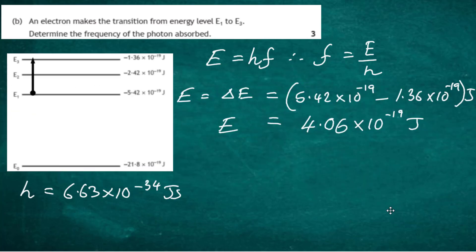So back to the equation again, the frequency of the photon is going to be equal to E divided by h, so we have got the energy level now, so frequency is going to be equal to energy difference 4.06 times 10 to the minus 19 joules. And we're going to divide that by the Planck's constant, which is 6.63 times 10 to the minus 34 joules seconds.